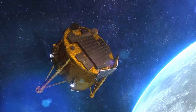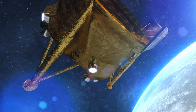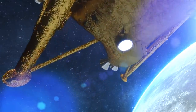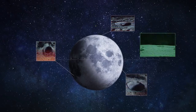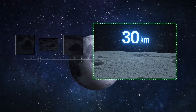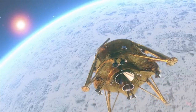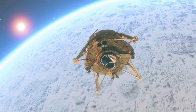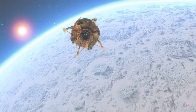How do you land a spacecraft on the moon? First, you locate a level plane with a diameter of 30 kilometers, free of rocks and craters. Then, you calculate the best time for the landing.